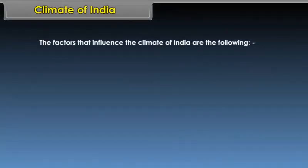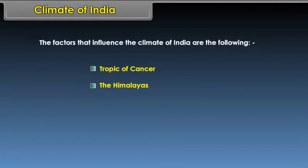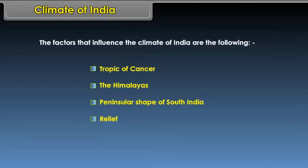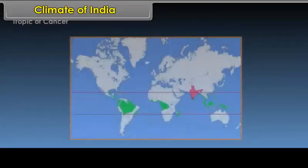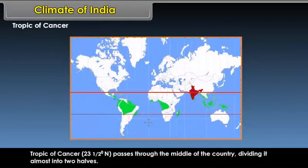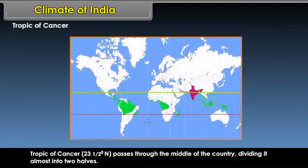The factors that influence the climate of India are: the Tropic of Cancer, the Himalayas, the peninsular shape of South India, and relief. The Tropic of Cancer passes through the middle of the country, dividing it almost into two halves.